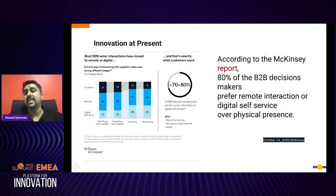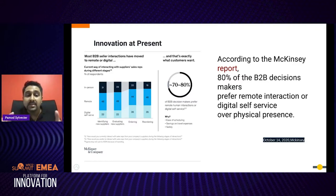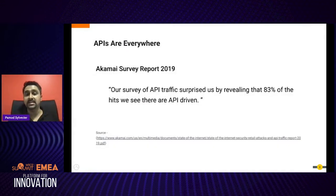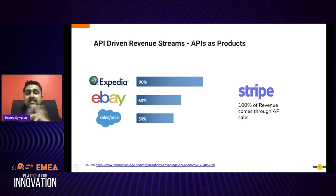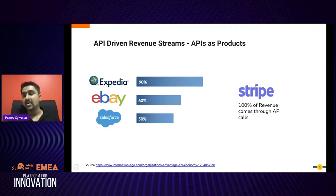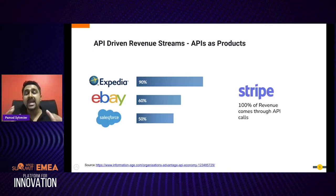McKinsey's report clearly states that more than 80 percent of stakeholders and decision makers now prefer to interact with organizations remotely. Akamai research reveals that more than 83 percent of the hits they have seen are API-driven. This highlights the importance of APIs. In monetary terms, giants like Expedia, eBay, Salesforce, and Stripe generate more than 50 percent of their revenue through APIs — making APIs your next-generation products.